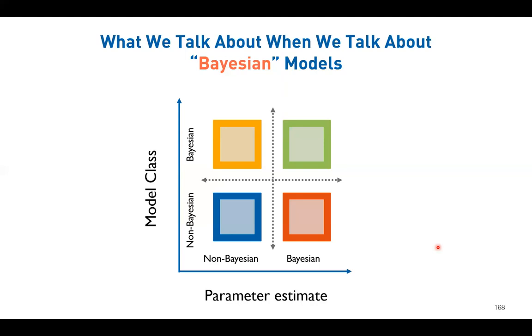Later in the seminar we will see a memory retention model - there is no Bayesian thing inside it, but you can estimate that model using a Bayesian approach. For the delay discounting model there is also no Bayesian update in the formula, but parameter estimation can be done using a Bayesian approach.